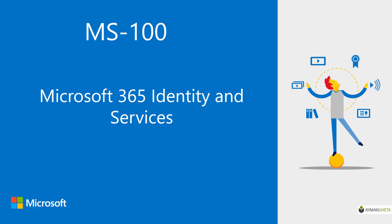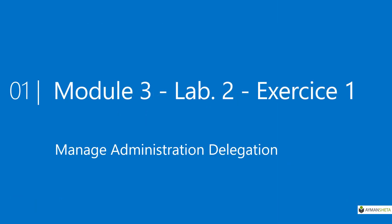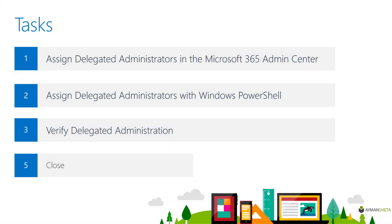Hi and welcome to this tutorial for MAS 100 course, Microsoft 365 Identity and Service. In this exercise we will continue with module 3, lab 2, exercise 1: manage administration delegation. We will learn how to manage administration delegation by assigning Microsoft 365 administrator roles to several users.